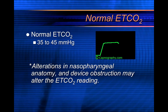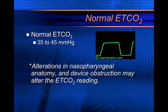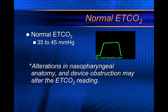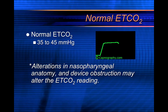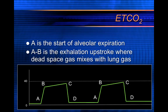The normal end-tidal CO2 value is between 35 and 45. Depending on what literature or publication you're reading it might have a different range — some say 30 to 40, some say 35 to 40 — but 35 to 45 is generally accepted as the normal range. You can have an alteration in this based on the anatomy of the patient or any obstruction in the device, so try to get good airflow into whatever type of device you're using.